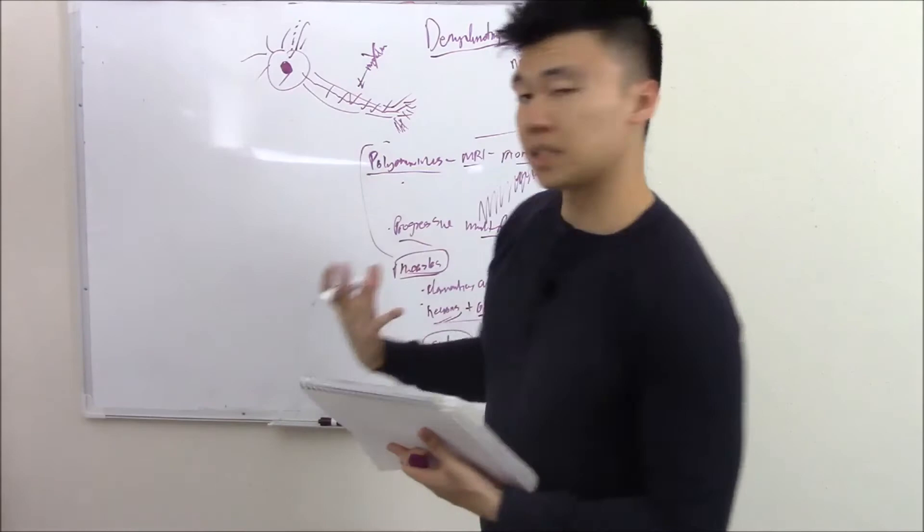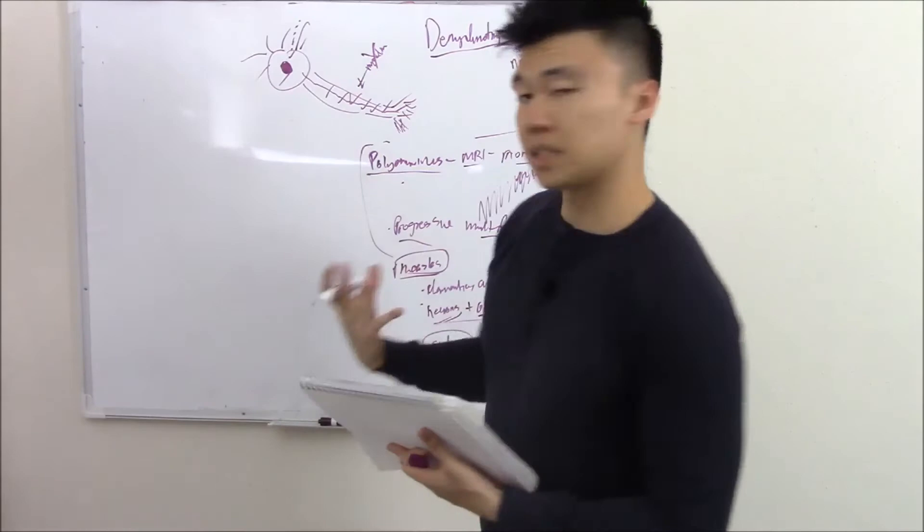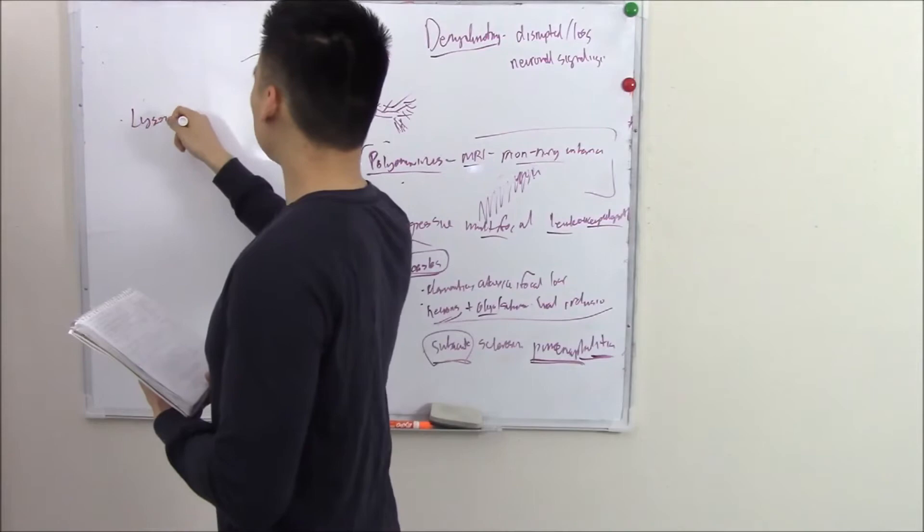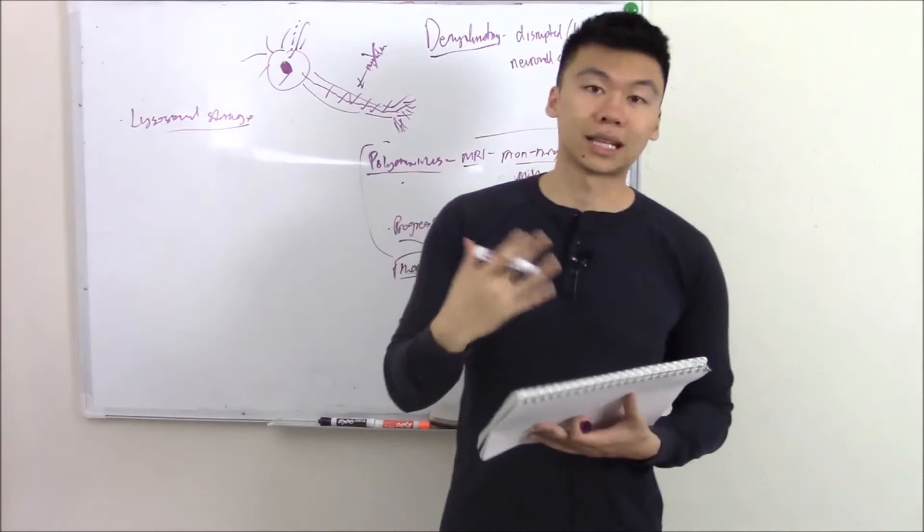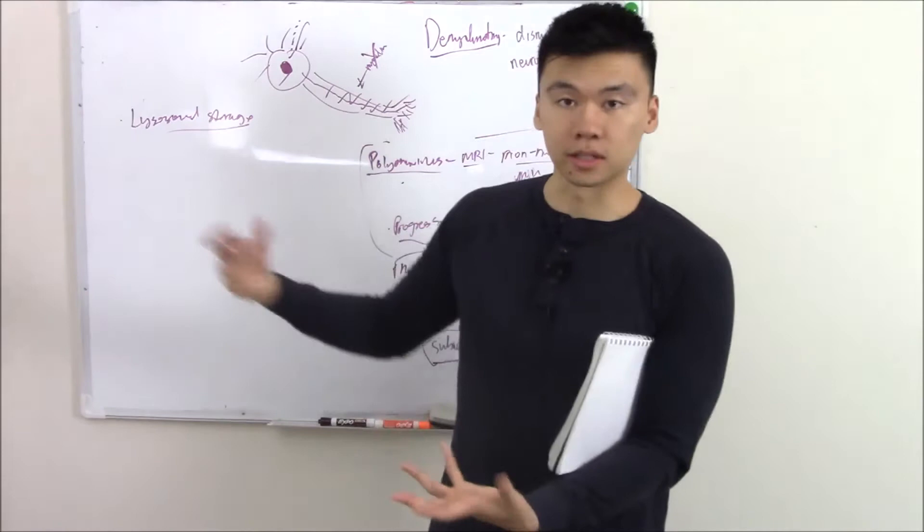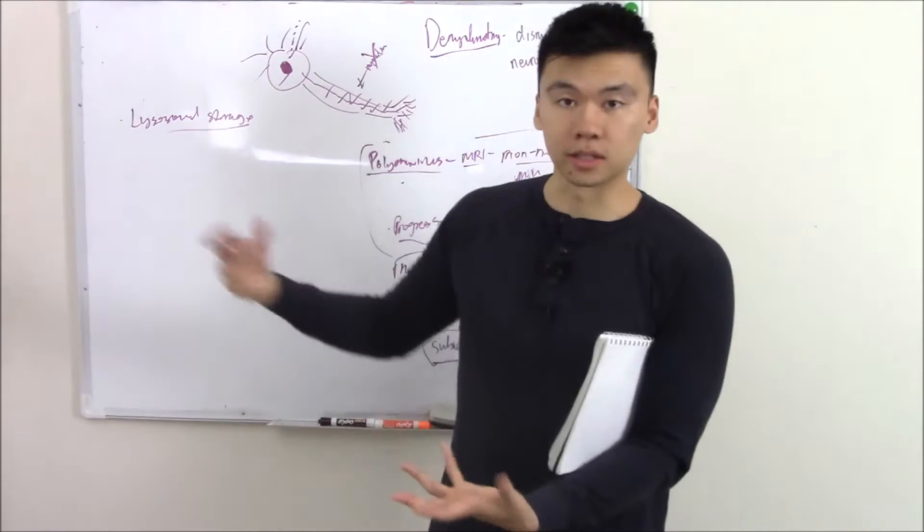Some other things that can cause demyelination, especially in your brain: lysosomal storage diseases. I talked about this in our biochem blog. These are things like Niemann-Pick, things like Tay-Sachs. They're a problem with lysosomal storage, and then the cells will die and cause this demyelination.